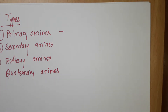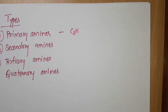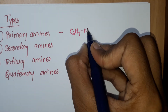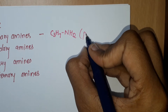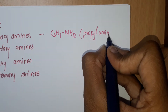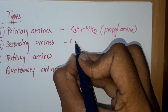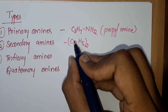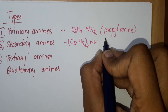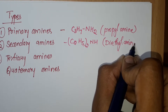For primary amine, the example is C3H7-NH2. This is propyl amine. Now for secondary amine, the example is (C2H5)2-NH — meaning two molecules of C2H5 and an N-H. This is diethyl amine.